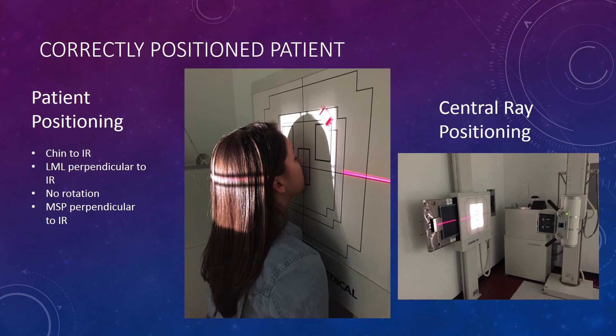To sum it up, a correctly positioned patient will have their chin to the board, LML and MSP perpendicular to the IR, and no rotation. There is a horizontal beam centered and perpendicular to the IR. The CR should enter the back of the head and exit at the acanthion.